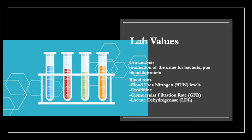For the renal system, we may look at the urinalysis, which can show the presence of blood, bacteria, or pus. We also look at blood work to demonstrate how well the kidneys are functioning. Blood urea nitrogen, or BUN, measures the urea nitrogen present in the blood — a byproduct of protein metabolism that is excreted by the kidney. If it's not being excreted properly, it means the kidney isn't doing its job.